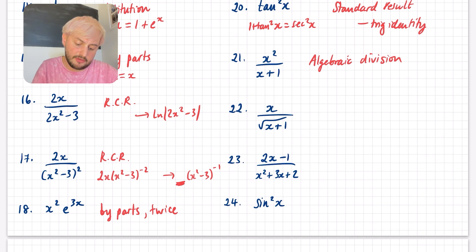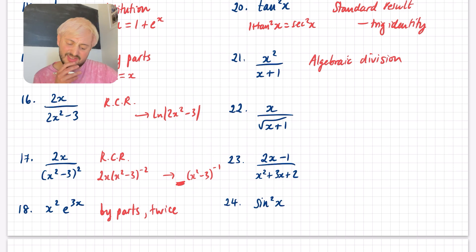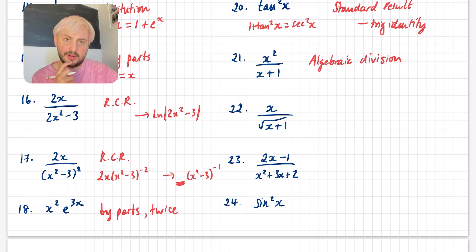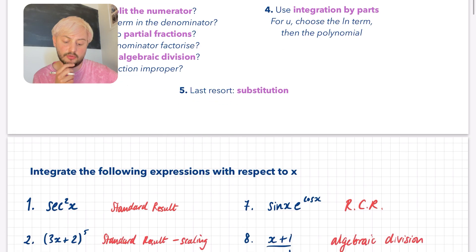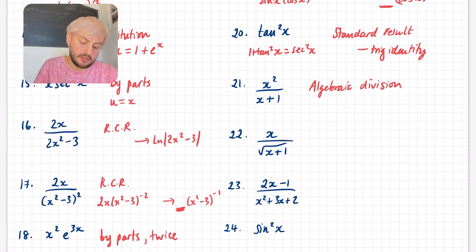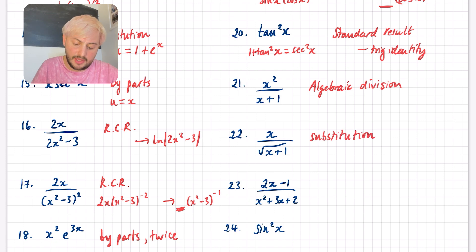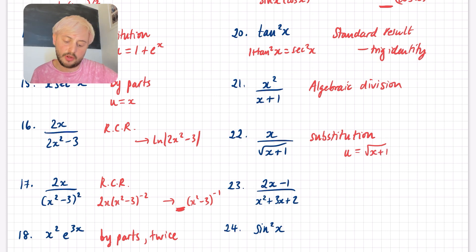Question 22: the derivative of the denominator (x + 1) is not going to relate to the numerator, so I don't think we can do the reverse chain rule. It doesn't look like I could split the numerator because of the square root sign, and I couldn't do partial fractions or algebraic division either. So this is one of those questions where we end up at our last resort — substitution. I would probably pick U = √(x + 1) for that substitution.